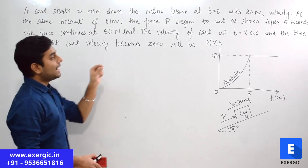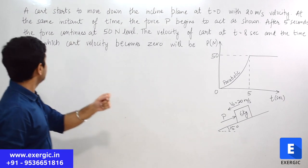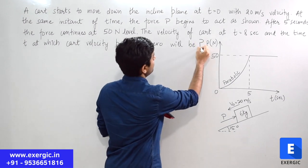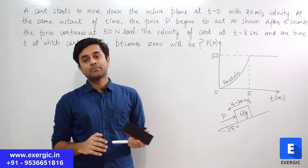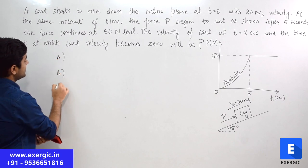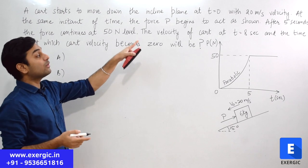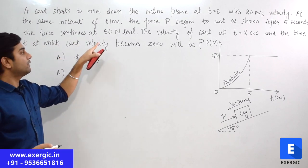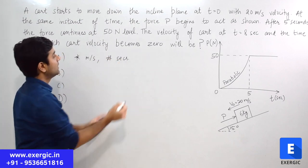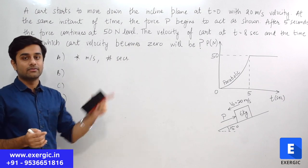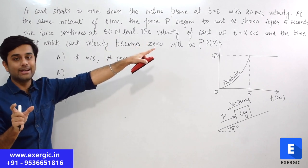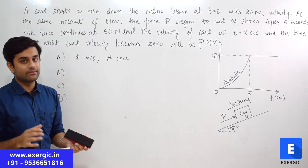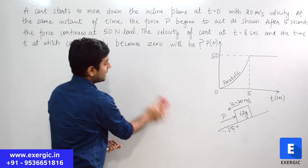The velocity of the cart at t equal to 8 seconds, and the time t at which cart velocity becomes 0 — these are what we need to find. This question had options; I have removed them so that you try them on your own and don't take any hint. First number was the velocity asked at t equal to 8 seconds, and the second part was the time when the cart velocity becomes 0 respectively.